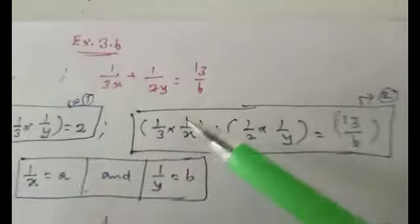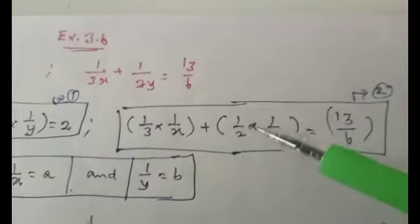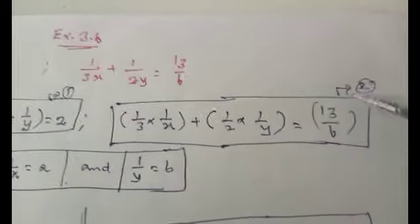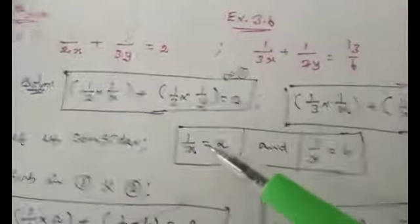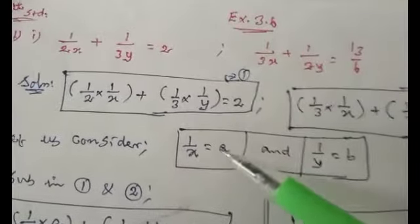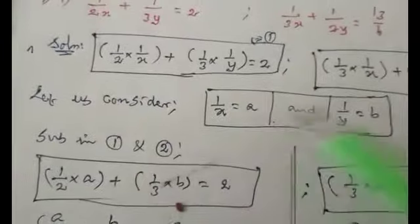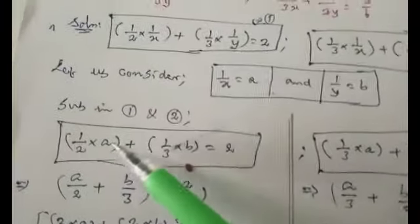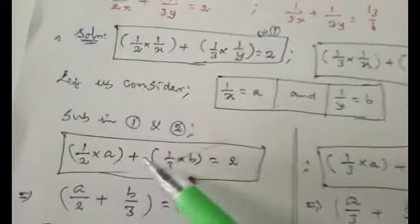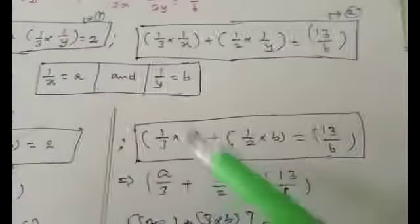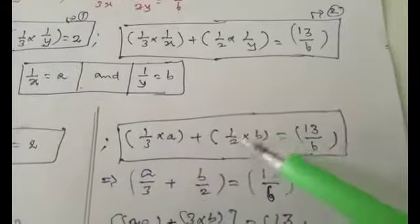Similarly, 1/3 · (1/x) + 1/2 · (1/y) = 13/6. Make it equation number 2. Now let us consider 1/x as 'a' and 1/y as 'b'. Substituting these values in equations 1 and 2: equation 1 becomes 1/2 · a + 1/3 · b = 2, and equation 2 becomes 1/3 · a + 1/2 · b = 13/6.